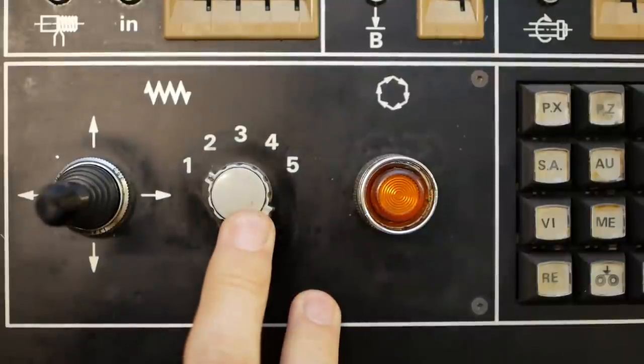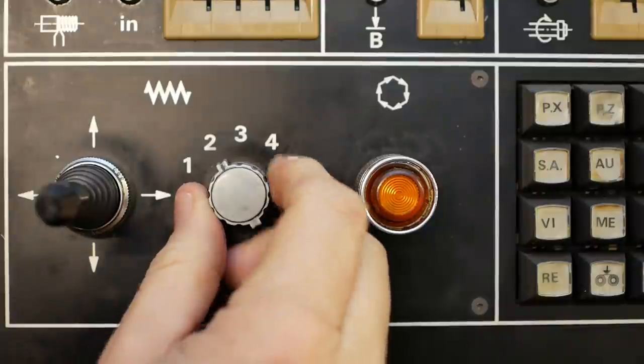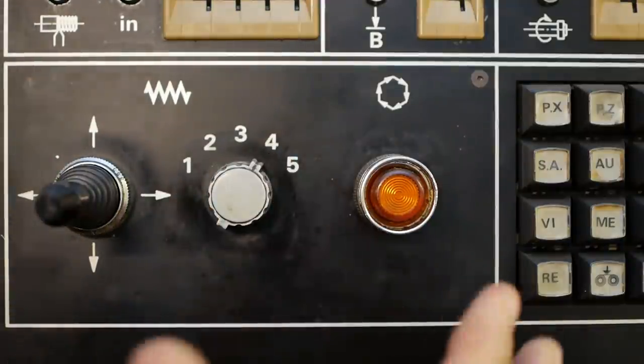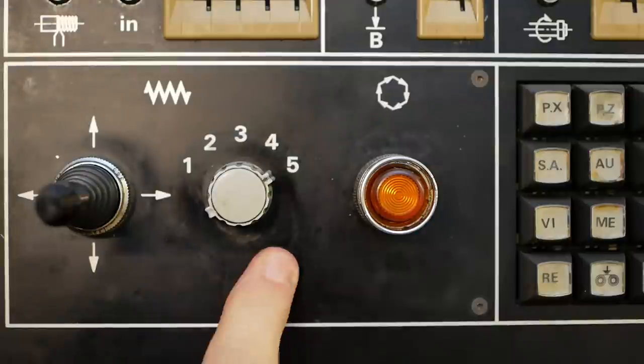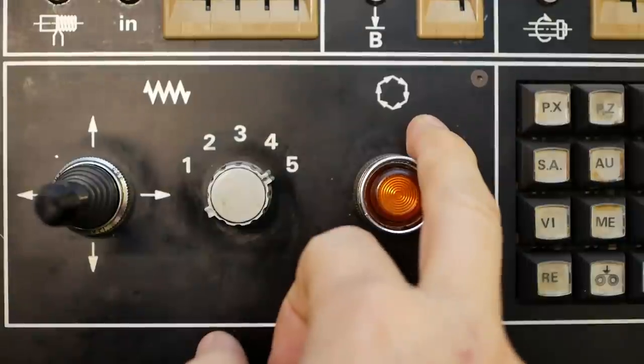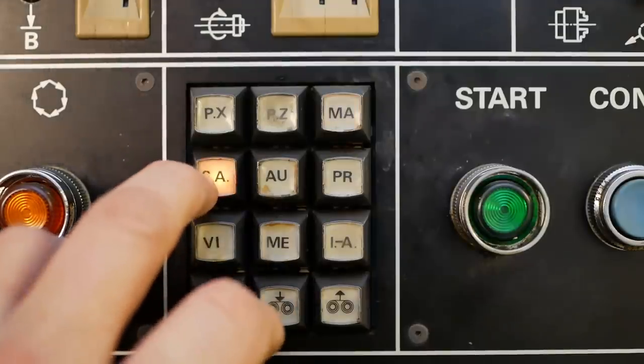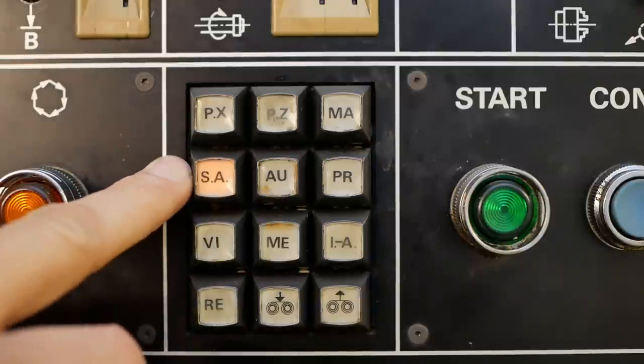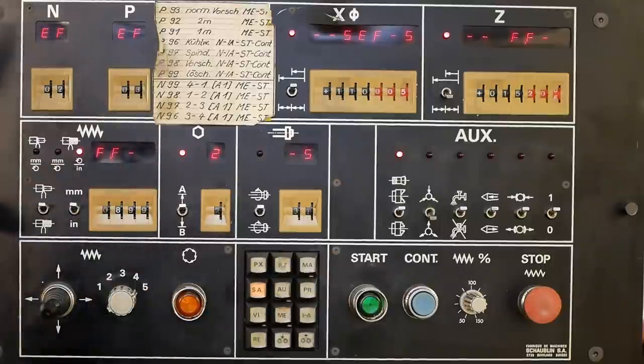With the switch, you're selecting your jog speed. The slowest is 10mm per minute, 25, 50, 400. And this one goes 1200 on the Z and 600 on X. This switch gives you a manual turn of your tool carousel. The next thing we have here is the SA mode. This is used like an MDI on a modern CNC, manual direct input. What you'll do is set a single line of code.